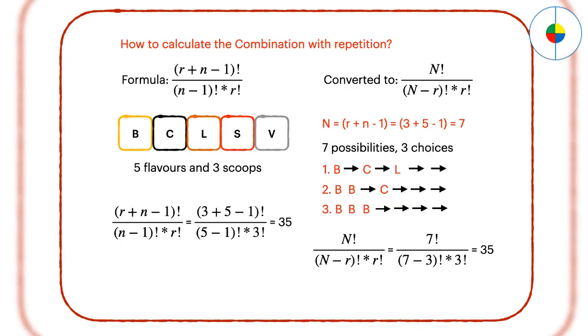To calculate the combination with repetition, here is the formula. For example, there are 5 flavors of ice cream: banana, chocolate, lemon, strawberry, and vanilla. We can have 3 scoops. How many variations will there be?